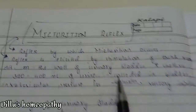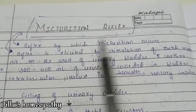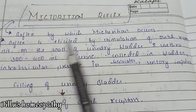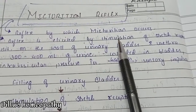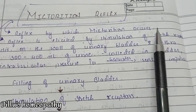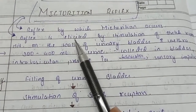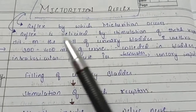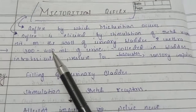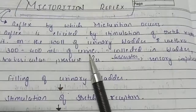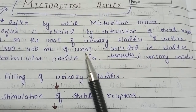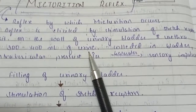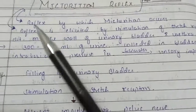Micturation — it is a reflex by which Micturation occurs. Micturation means urine is out from the urinary bladder. That process is known as Micturation.